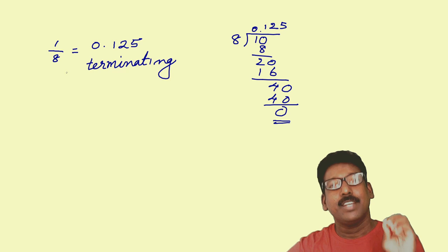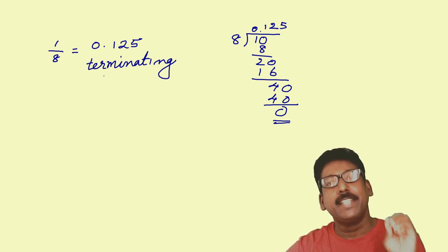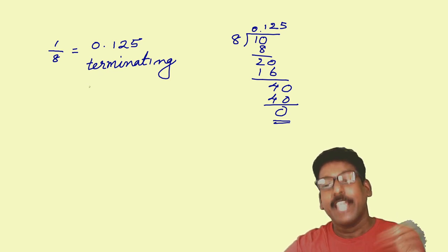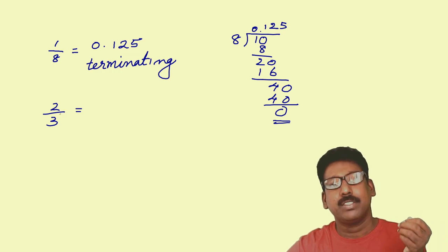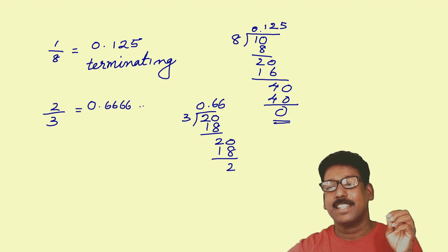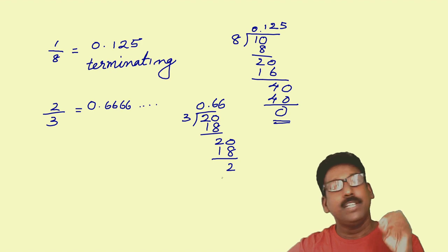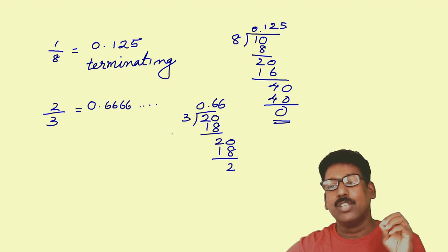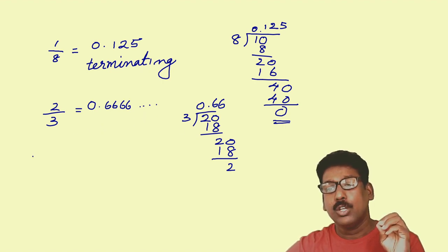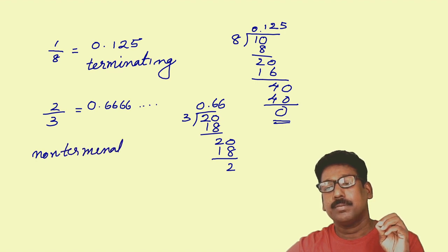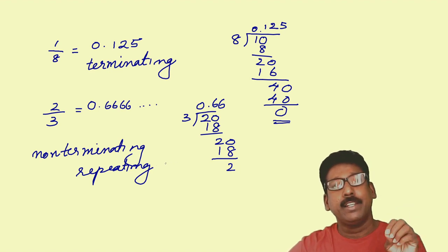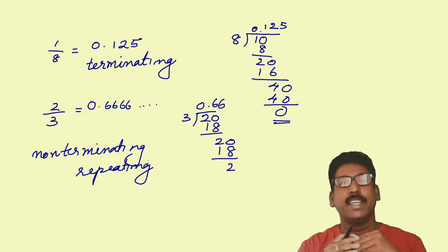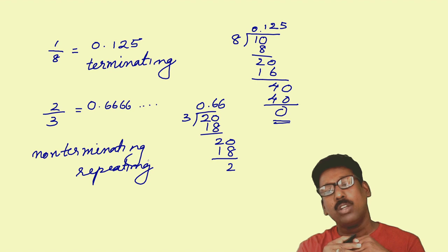Or we can say 1 by 8 has a terminating decimal expansion. Now let me consider another rational number, 2 by 3. Divide 2 by 3, what will you get? You get 0.6666. Here you can see the division process is not ending or not terminating. So this kind of decimal, 0.666, we can call it as non-terminating repeating decimals because 6 is repeating. So non-terminating repeating decimals or non-terminating recurring decimals, you can say. So if you take any rational number, it will be either terminating or non-terminating.